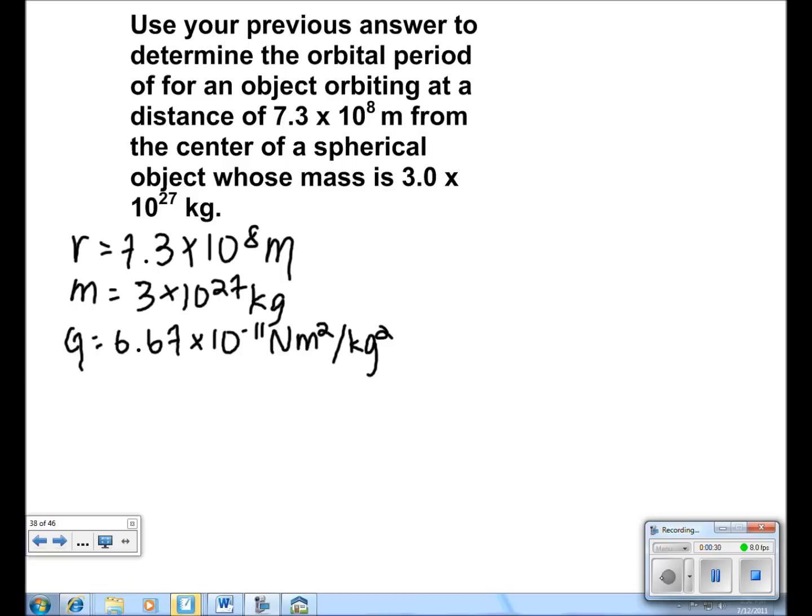In this problem, we're looking to find the period. To find the period, we must find the surface gravity first, so we use the formula g equals GM over r squared.